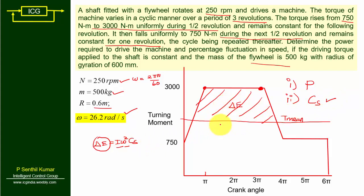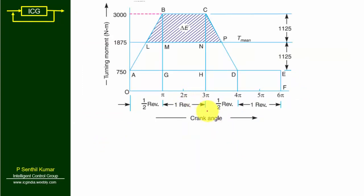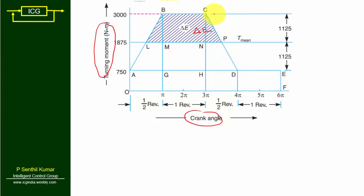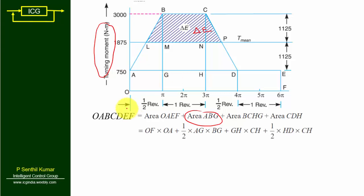To find ΔE, we first need T_mean. The turning moment diagram has a T_mean line, and the hatched portion above it represents ΔE, with notation points A, G, H, D, E, F, N, P, L, M, C marked. We are going to find the total area of the turning moment diagram, since total area equals total work done.